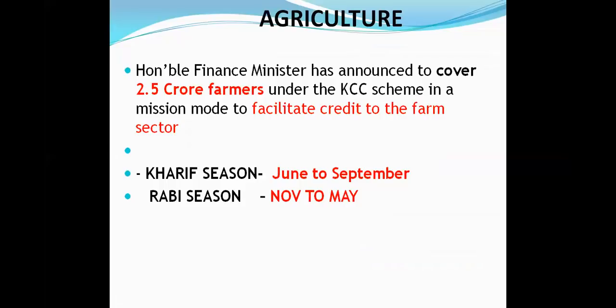Recent announcement: Finance Minister stated 2.5 crore farmers to be covered under KCC from the banking system. Crop seasons: Kharif — June to September; Rabi — November to May.